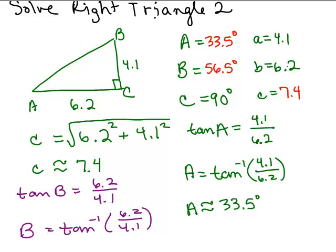B, the medium size angle, is across from the medium side. And C, the right angle, which is the biggest angle, is across from the largest side, the hypotenuse.